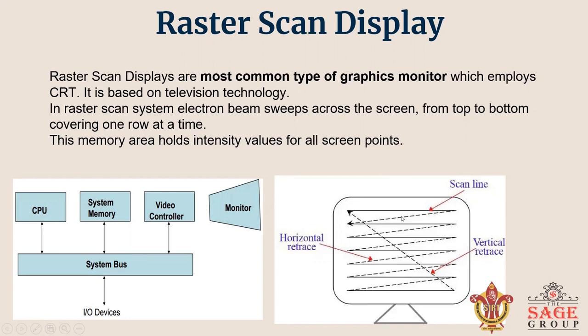These are the scan lines. As the electron beam moves across each row, the beam intensity is turned on and off to create a pattern of illuminated spots.